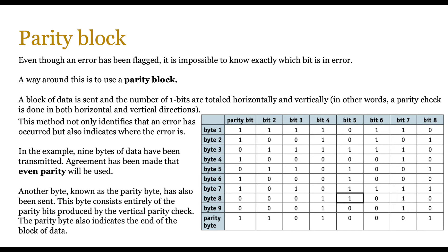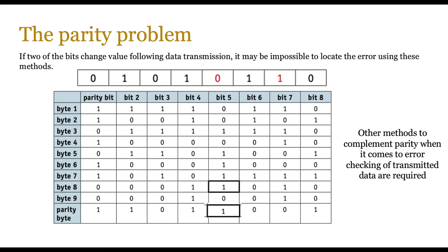Of course, there is a major problem with this: what happens if two bits have an error? And that's the parity problem. If two of the bits change value during data transmission, it may be impossible to locate the error using these particular methods. And that's why we need to use other methods to complement parity checks when it comes to error checking of transmitted data. No way around this one, I'm afraid.